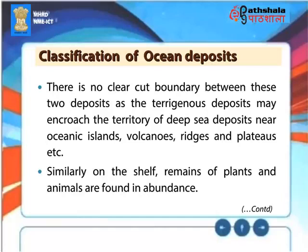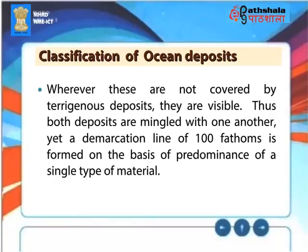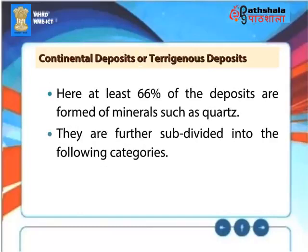Similarly, on the shelf, remains of plants and animals are found in abundance. Wherever these are not covered by pterigenous deposits, they are visible. Thus both deposits are mingled with one another, yet a demarcation line of 100 fathoms is formed on the basis of predominance of a single type of material. Continental deposits are pterigenous deposits where at least 66% of the deposits are formed of minerals such as quartz. They are further subdivided into the following categories.